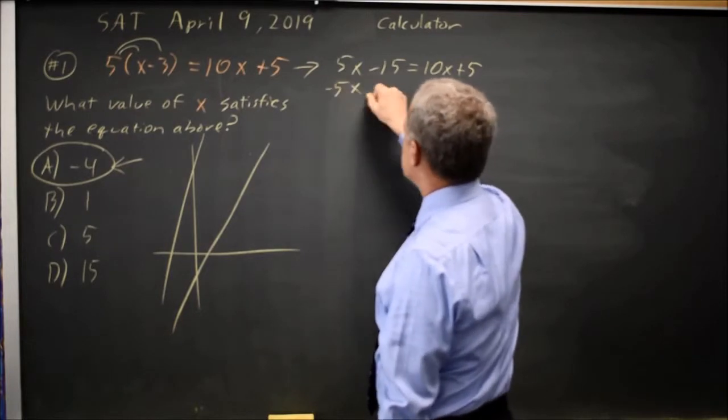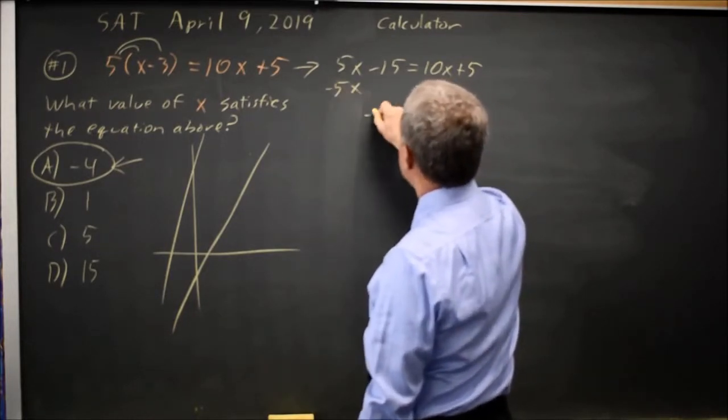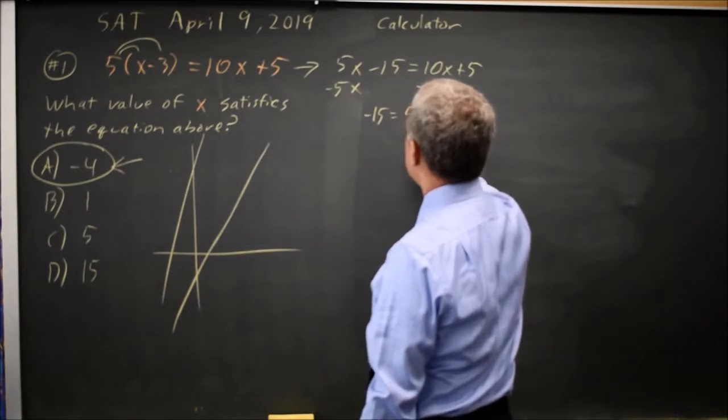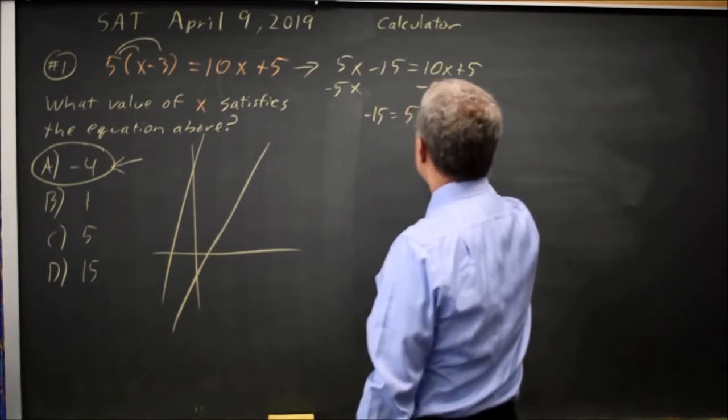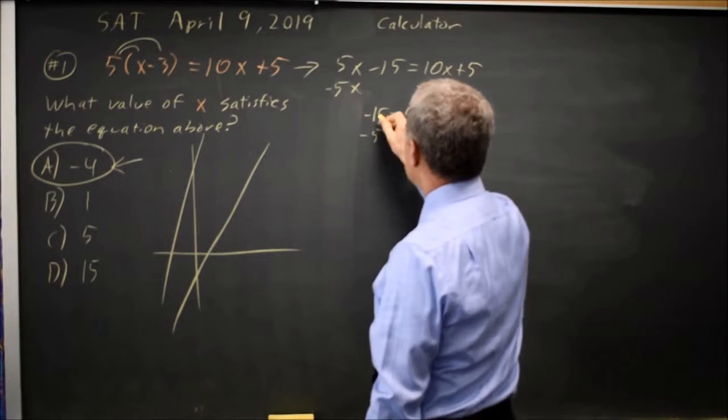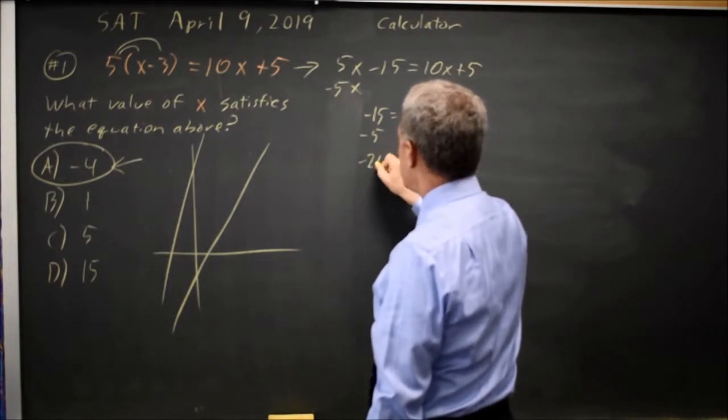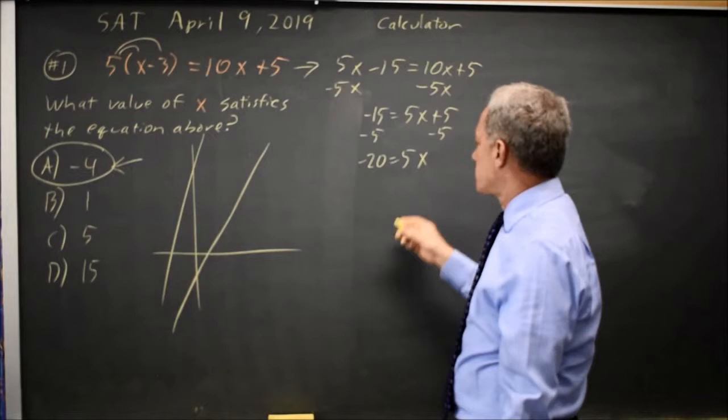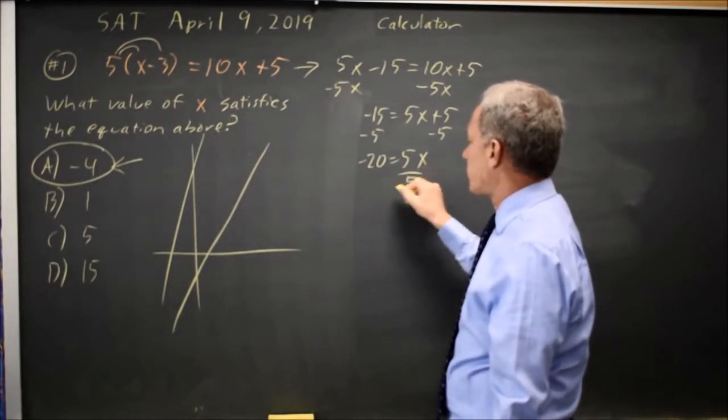Subtract five X from both sides, and I get negative fifteen equals five X plus five. Since X is multiplied by five, I'm going to divide by five.